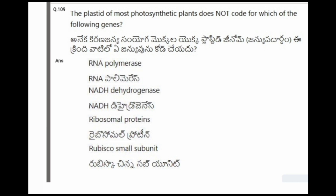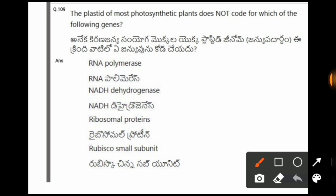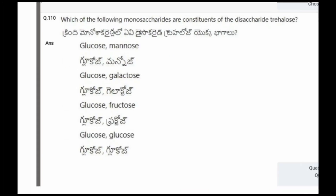Next question: The plastid of most photosynthetic plants does not code for which of the following genes? The options are RNA polymerase, NADH dehydrogenase, ribosomal proteins, rubisco small subunit. The correct option is the fourth one, rubisco small subunit.